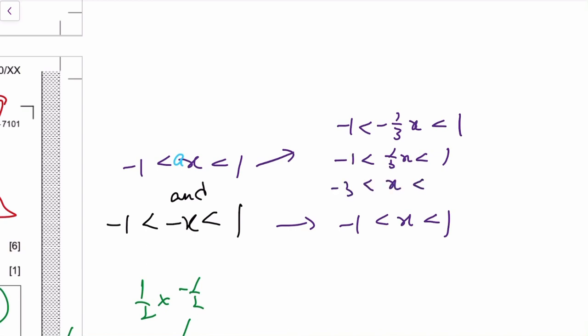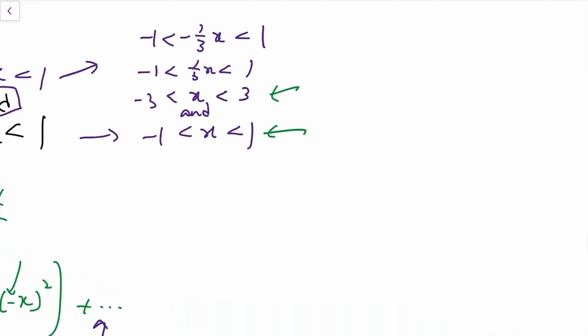Now remember this condition is like an AND, so you need values of x that satisfy both conditions, so it's kind of like you want the intersection of both conditions.